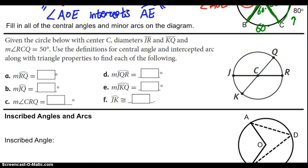Let's take a look at this problem down here. Given the circle below with center C, diameters J-R and K-Q, and the measure of angle RC-Q is 50 degrees. Let me label that RC-Q is 50 degrees. Good. Use the definitions for central angle and intercepted arc along with the triangle properties to find each of the following, and then give us six things to find. So, what I suggest you do now is pause the video and try and do A-B-C-D-E-F. All right, so let's start with A. They want to know the measure of arc-R-Q. Well, here's arc-R-Q. And that arc has a central angle of 50 degrees, so the arc will also be 50 degrees. So, 50 degrees it is.